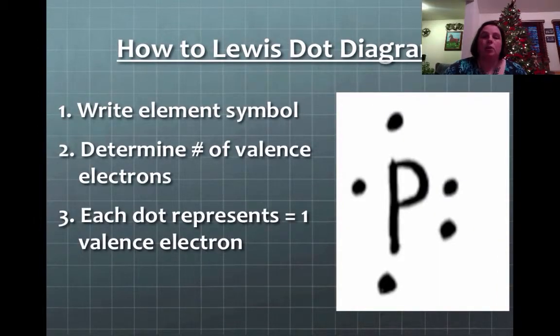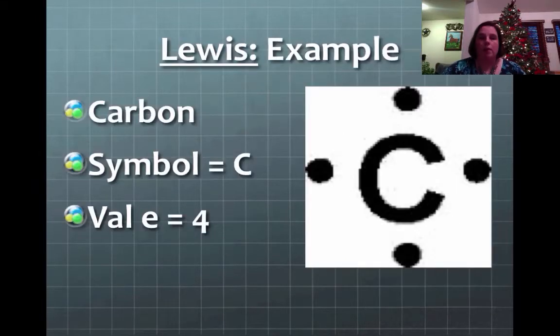So, how do you actually write a Lewis dot diagram? Well, first of all, you find the element symbol. Remember, that can be a capital letter in a lower case. It could be one or two or even three. You determine the number of valence electrons. And then you put a dot around each one that represents a valence electron. And we do this in more of a square than a circle because it'll help you later on. So, here's an example of carbon. Carbon has the symbol of C. And we know it has four valence electrons. So, it's showing you four dots around carbon. So, this would be a completed Lewis dot diagram.